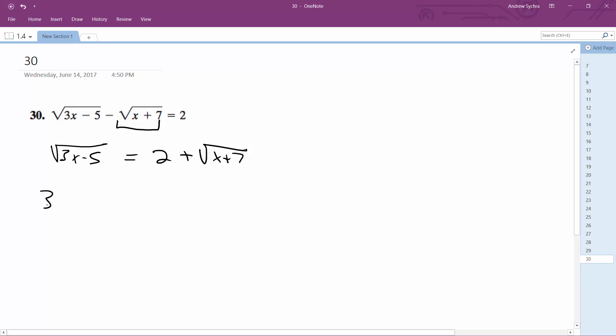Squaring both sides, we get 3x minus 5 is equal to 4 plus 4 root x plus 7 and then plus x plus 7. And then move, so minus 4 minus x minus 7.